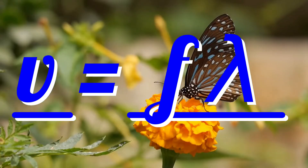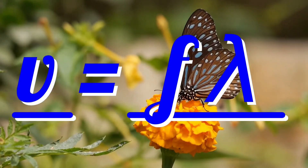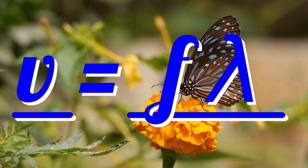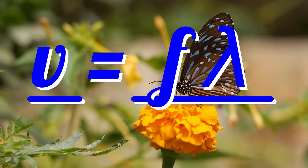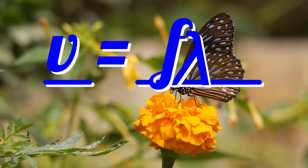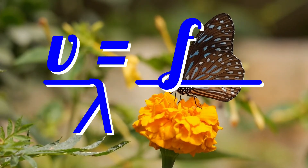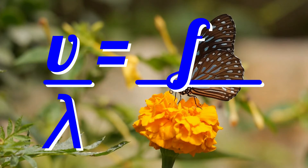To make the frequency the subject of the equation, if you know the velocity and the wavelength, divide through by wavelength — that is, move the lambda under the v. v over lambda equals f. Velocity divided by wavelength equals frequency.